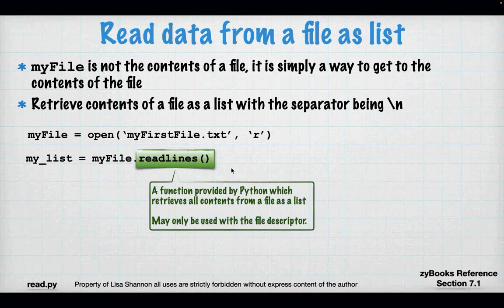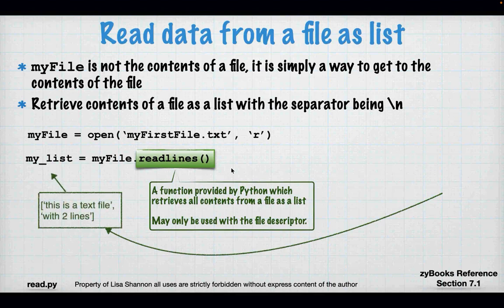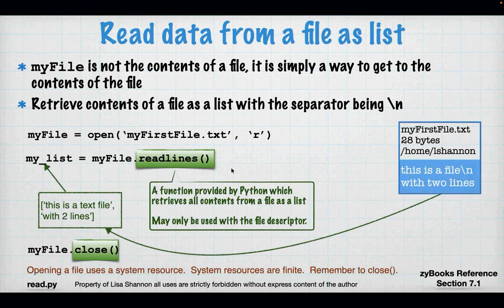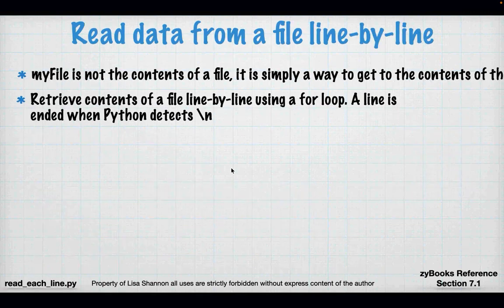So that's what I would have for my list from my file. This is a text file with two lines. Because I'm using read lines — different from the last slide which was read — this is read lines, so I get a list. And that can be very handy when you're processing stuff.